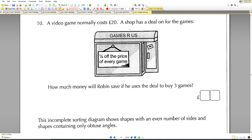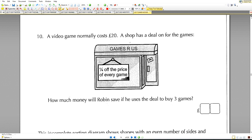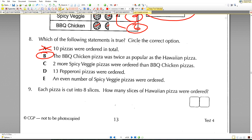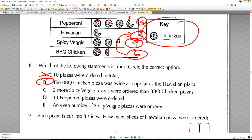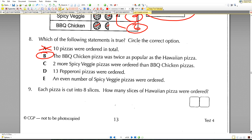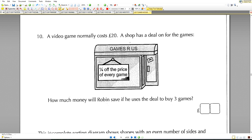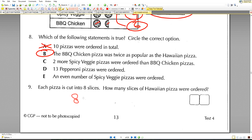Each pizza is cut into eight slices. How many slices of Hawaiian pizza were ordered? Let's have a look—for Hawaiian we had three pizzas here, so we're going to cut each of them into eight pieces. Eight times by three gives us a total of 24 pieces.